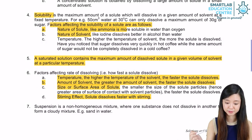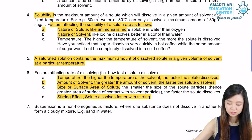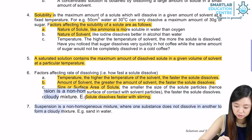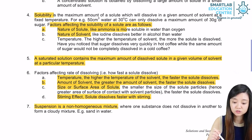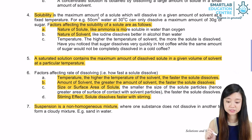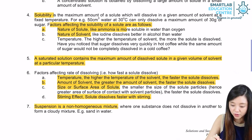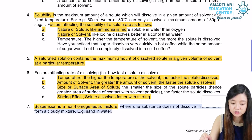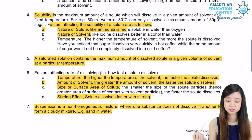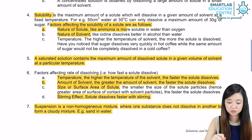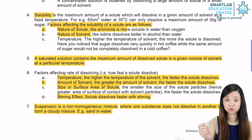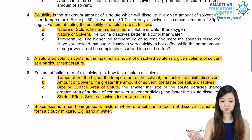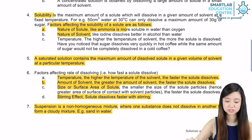Let's look at suspension. A suspension is a non-homogeneous mixture — non-homogeneous means that it's not the same, where one substance does not dissolve in another and it forms a very cloudy mixture. A very good example is sand in water: when you try to dissolve sand, it does not dissolve, so the whole thing is actually a suspension.